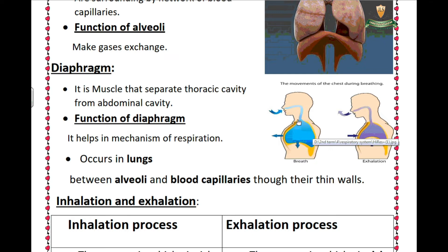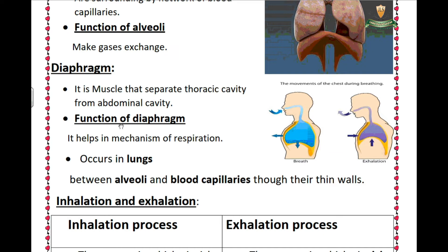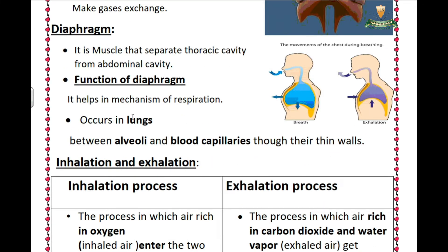The diaphragm separates two cavities: number one, the thoracic cavity, and number two, the abdominal cavity. The diaphragm is a muscle that moves up and down and separates the two cavities. The function of the diaphragm is that it helps in the mechanism of respiration — meaning inhalation and exhalation.